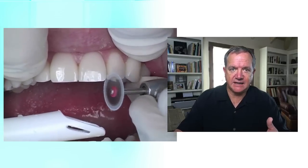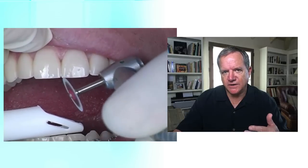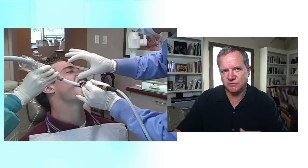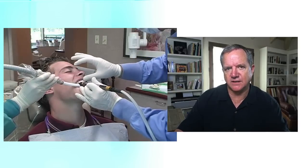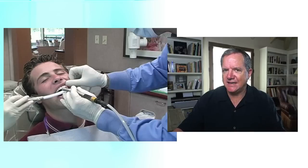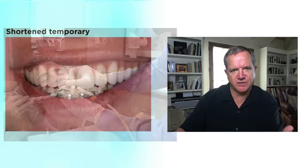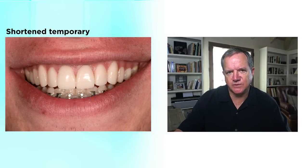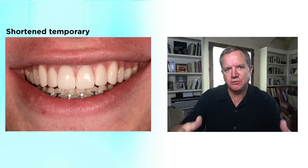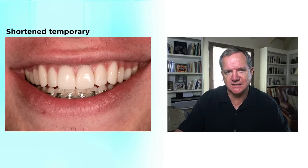Using discs in a contra-angle, we can start to recreate the incisal embrasure form. I really like these little diamond discs that fit in the contra-angle. We recreate the embrasure between the centrals, and recreate the embrasure between the laterals. This is a really important thing: my final embrasure and contouring I do with the patient sitting up a bit, and I stand in front of them looking straight down. When the patient is laying on their back it's really hard to see aesthetics. This is what the temporary looked like after we'd shortened it, put back in the embrasures, and polished it again using that rubber wheel. You can also use some of the discs you're used to working with for composites as well.